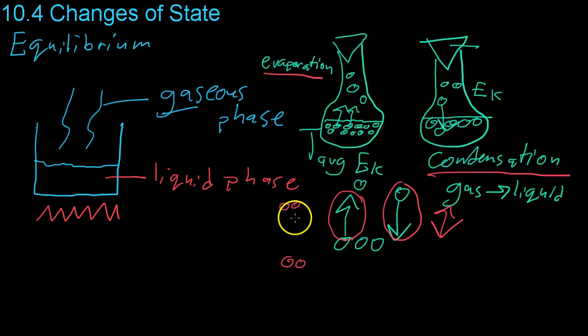Eventually, the system's going to reach a point where things evaporate just as fast as they condense. And at this point, we're going to have pretty much the same number of gas molecules and liquid molecules at all times. When the processes are equal, that is what is known as the state of equilibrium, where the two opposite processes balance out.